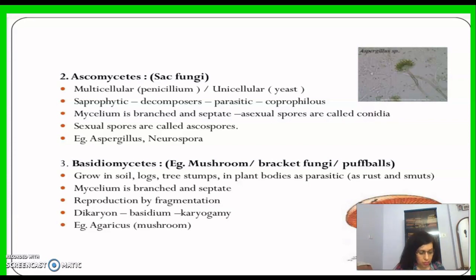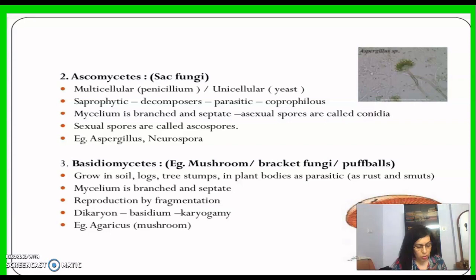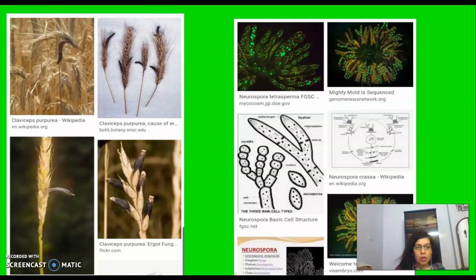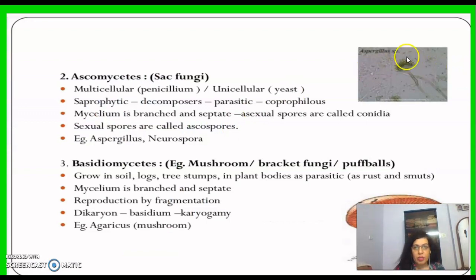Asexual spores called conidia are produced exogenously on conidiophores. Sexual spores are produced endogenously in sac-like asci and they are arranged in different types of fruiting bodies called ascocarps, and the spores are called ascospores. Examples include Aspergillus, Neurospora, Penicillium, and Claviceps.